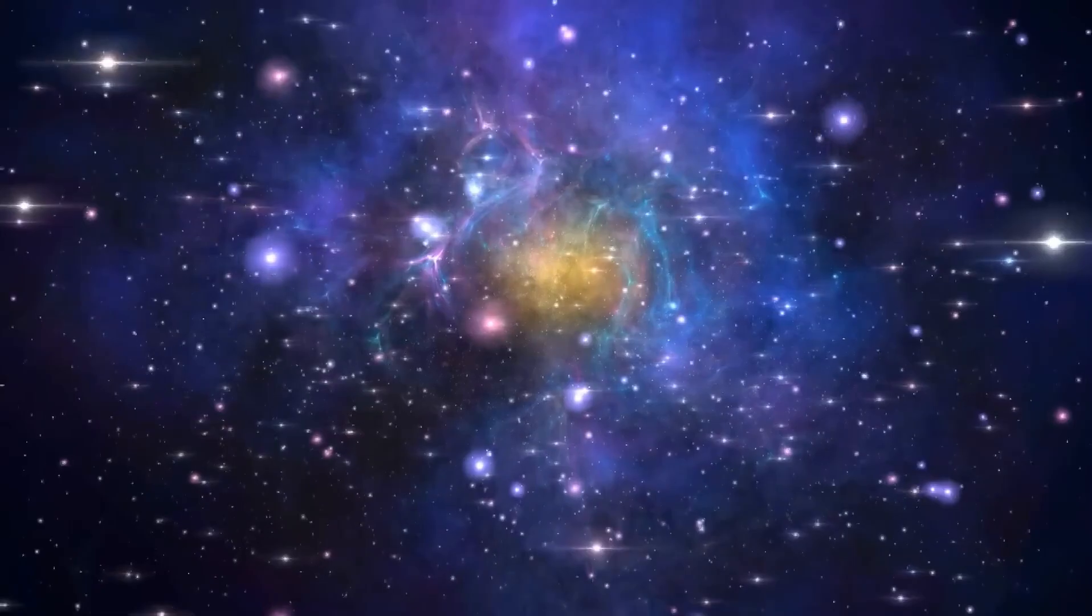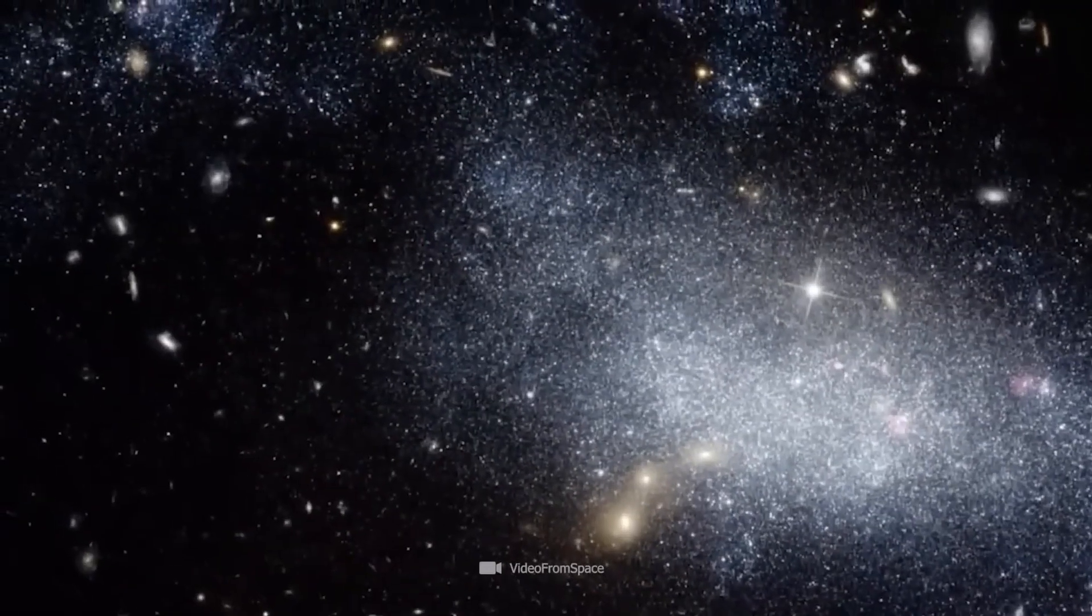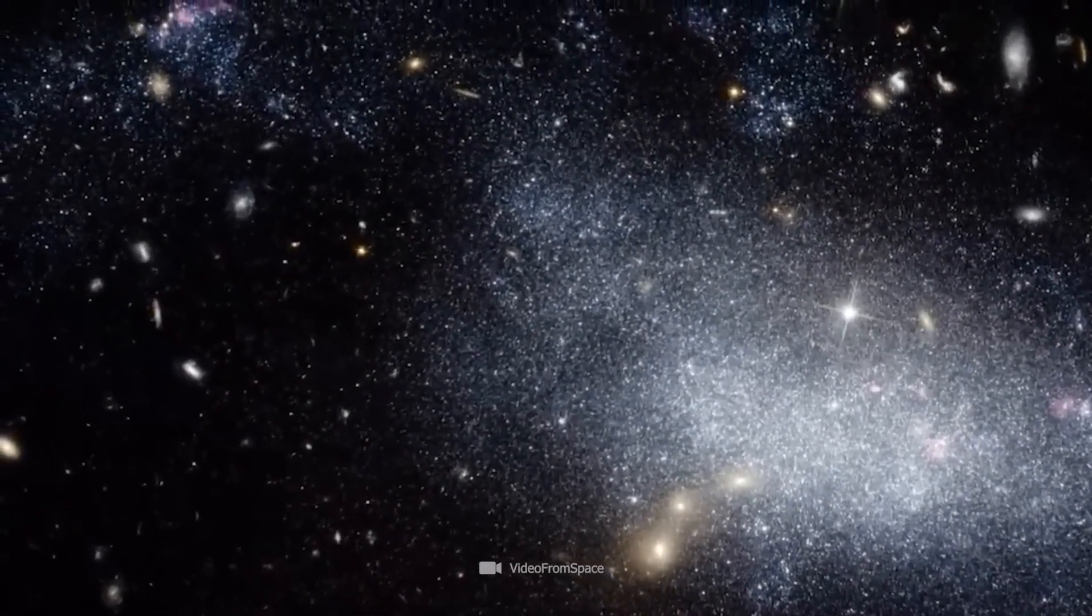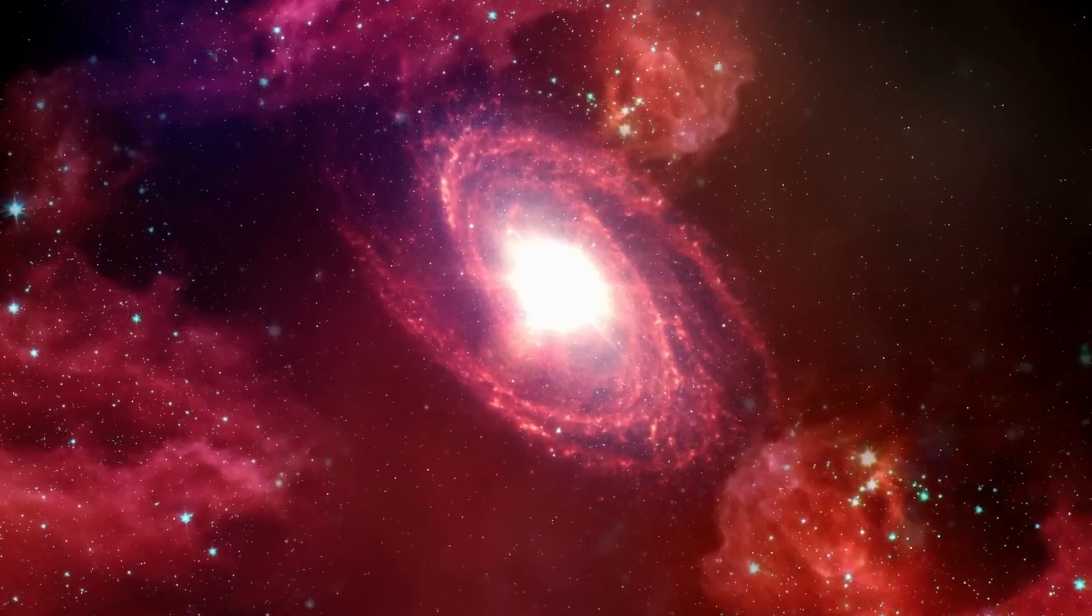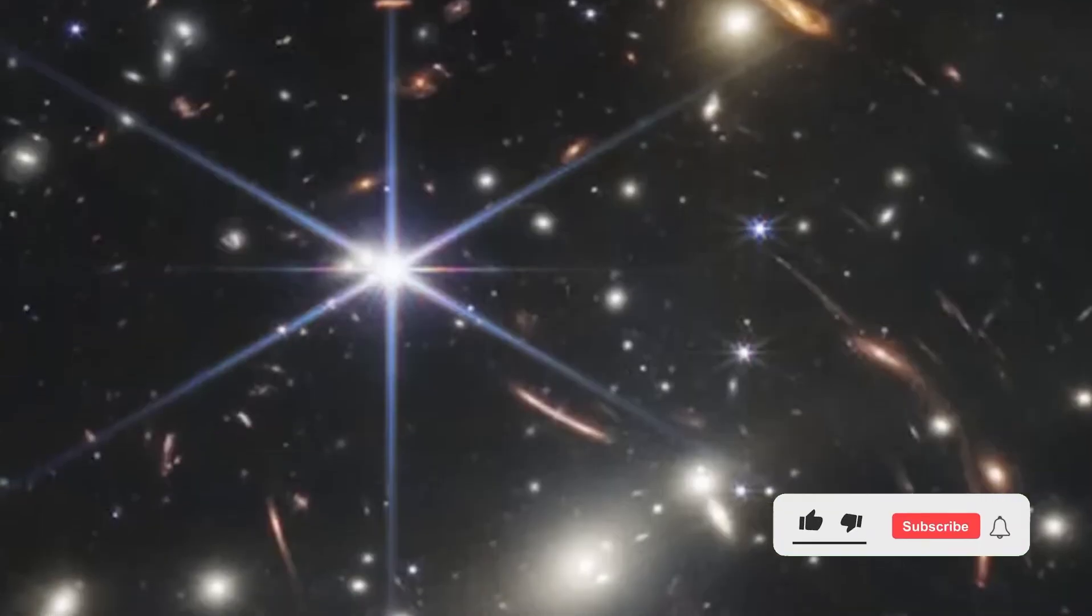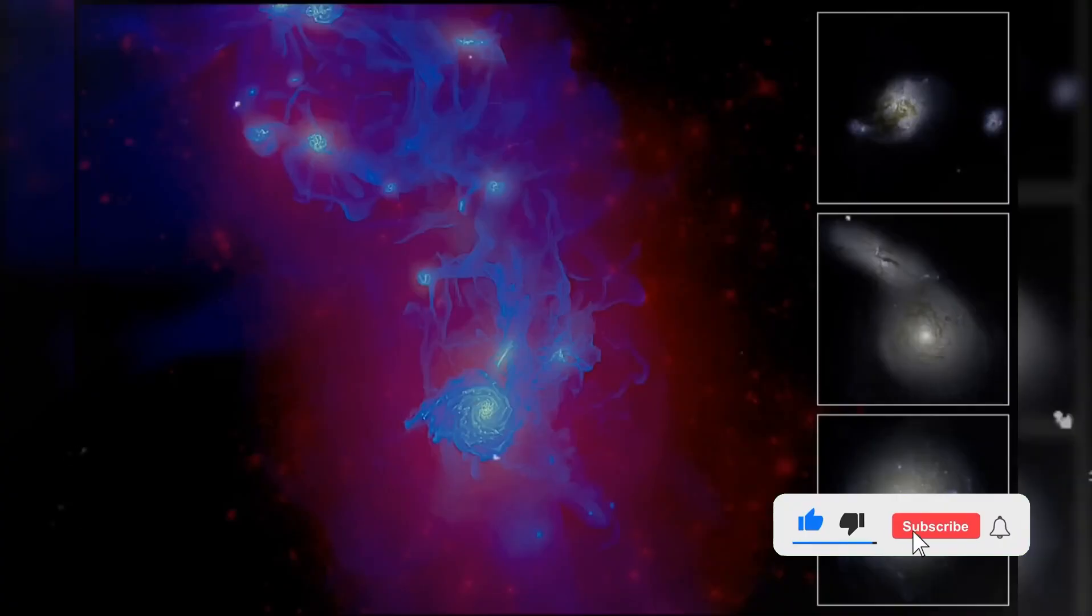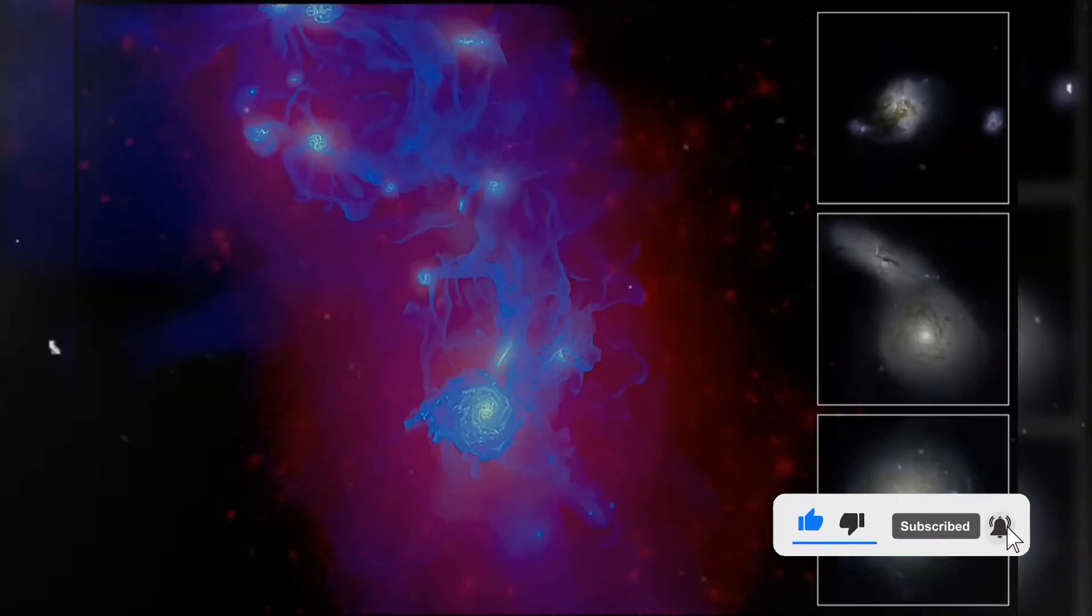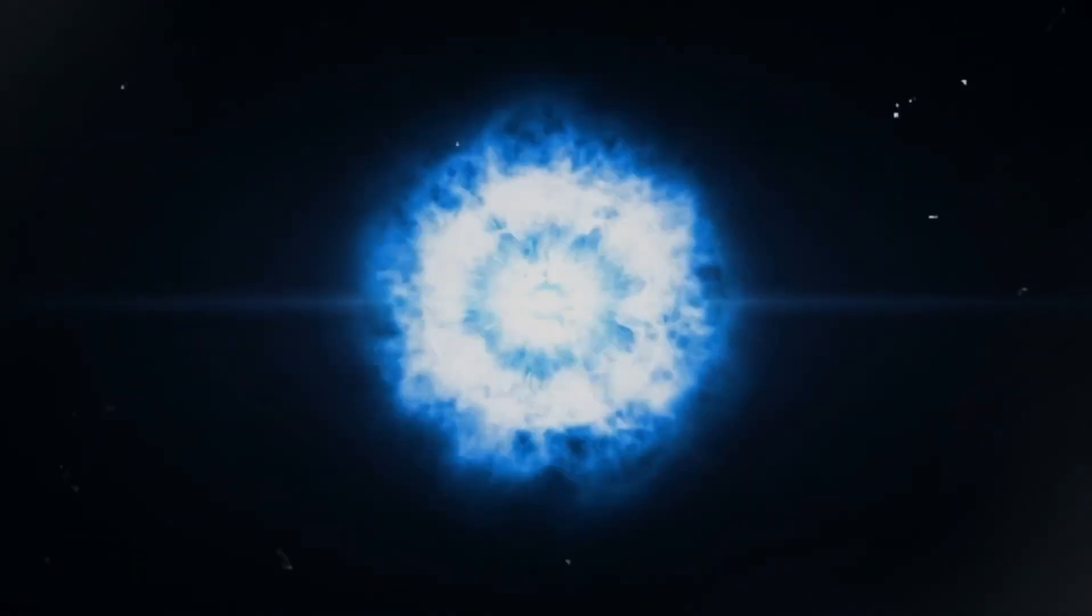Fast forward to the James Webb Space Telescope's recent findings, and cosmologists are once again wrestling with new mysteries. The telescope has revealed an unprecedented number of bright galaxies at the edge of the observable universe, defying previous expectations. These galaxies, formed earlier and more massive than predicted, have prompted a re-evaluation of fundamental assumptions about cosmic evolution.